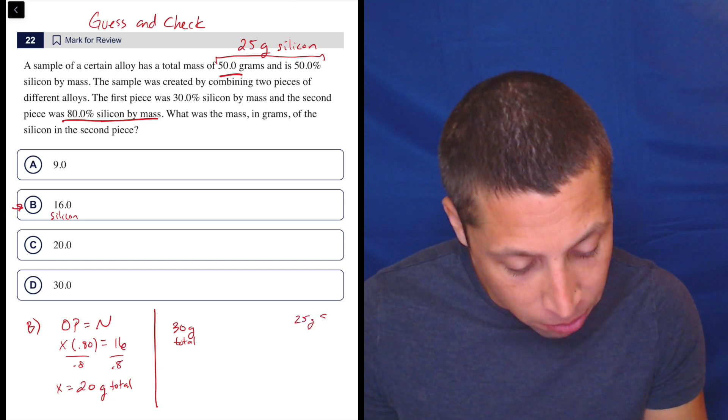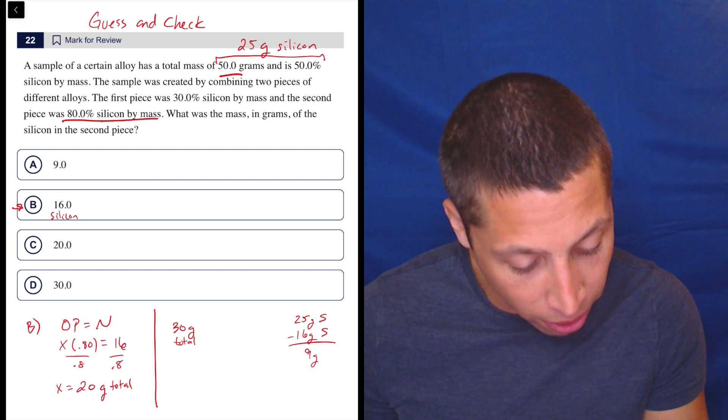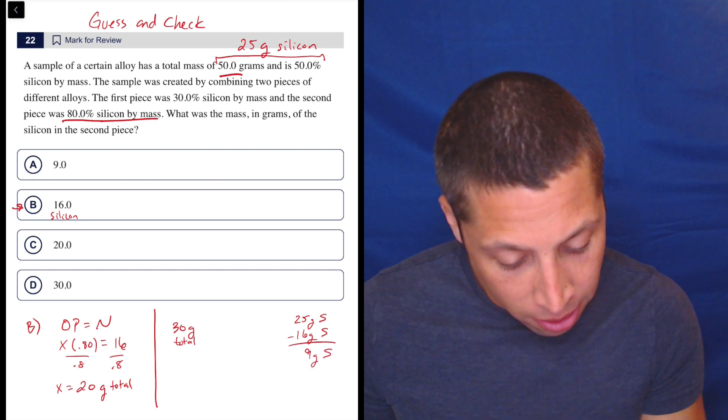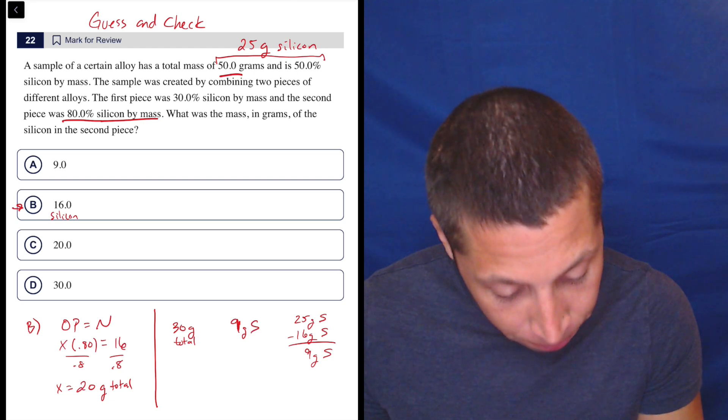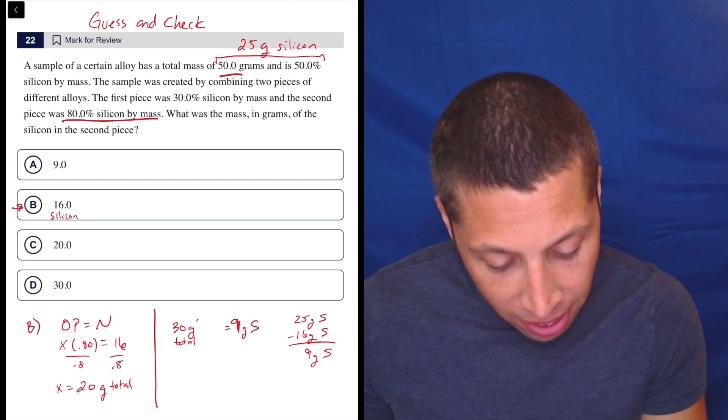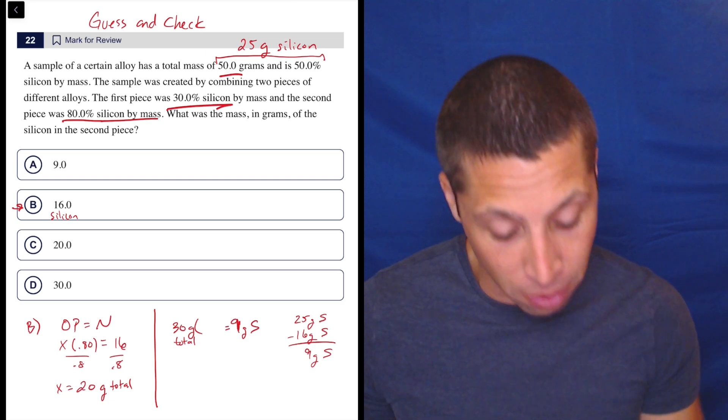So that's nine grams of silicon. And we could use the open formula again, because that nine grams is supposed to be 30% of the mass of the whole piece. So 0.3.